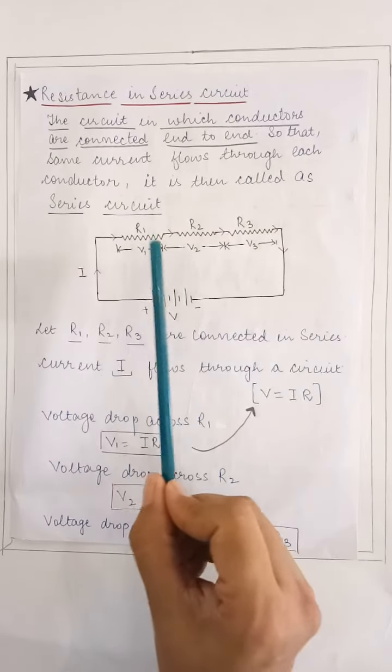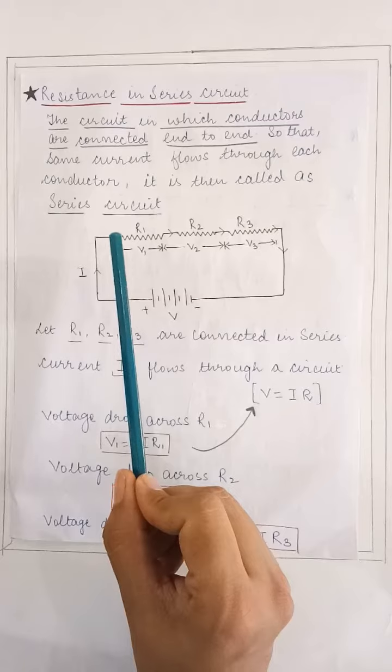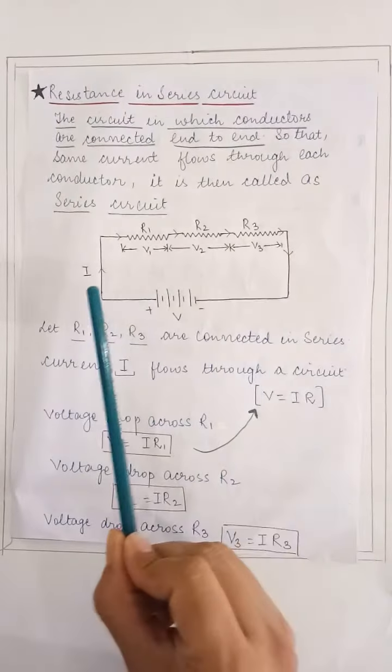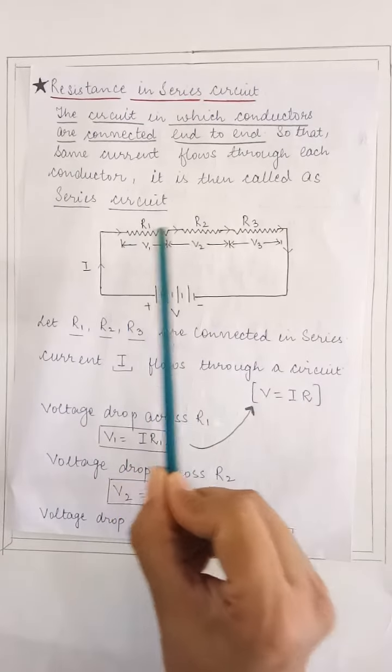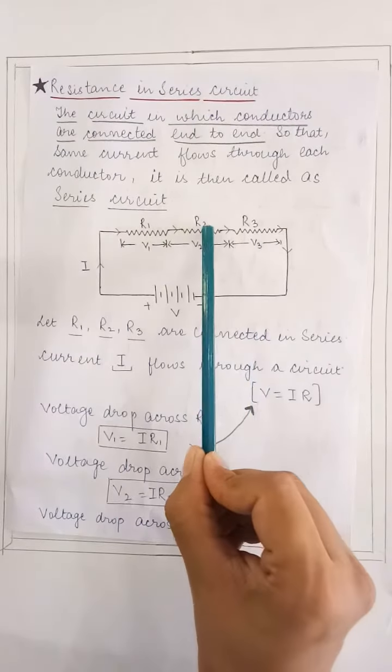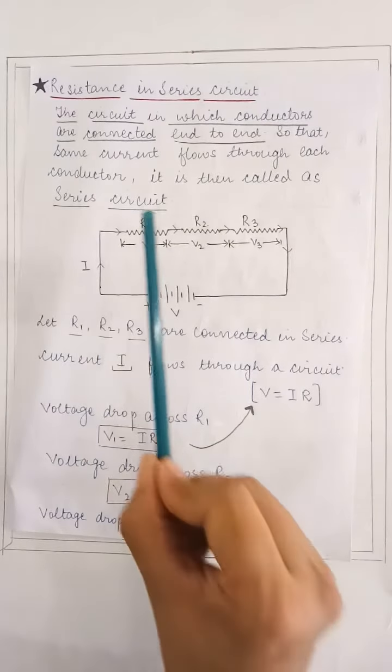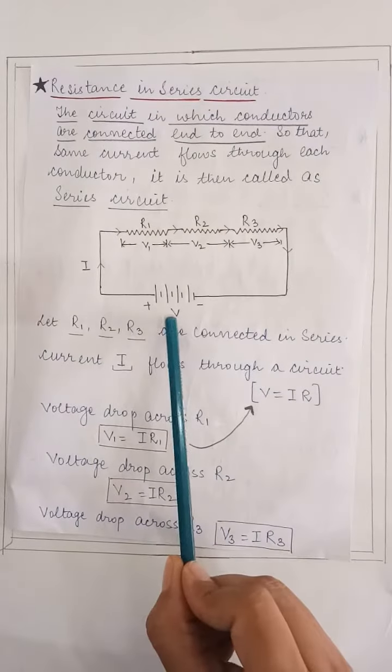Let's take an example of three resistors. Suppose three resistors R1, R2 and R3 are connected in series, what will happen? Voltage drops will be different in each resistor and the same current will flow through these resistors. And V is the voltage source.